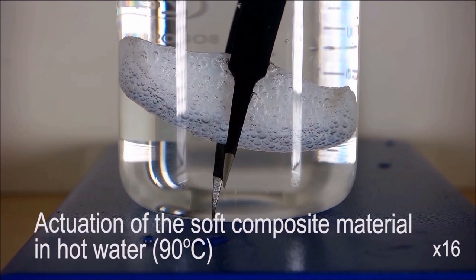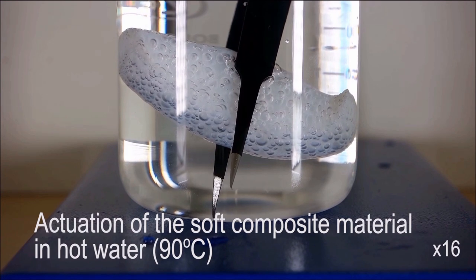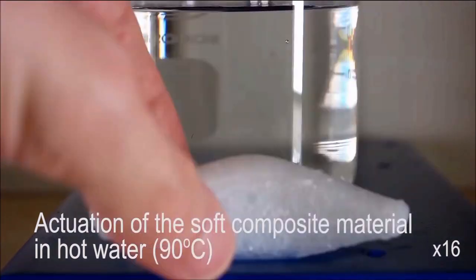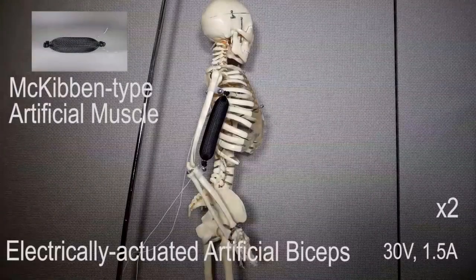Synthetic muscle tech is presently reliant on tethered external compressors and high voltage equipment, but robots fitted with this new tissue could theoretically be freed up to move around like humans, enabling them to better grip and pick up objects.